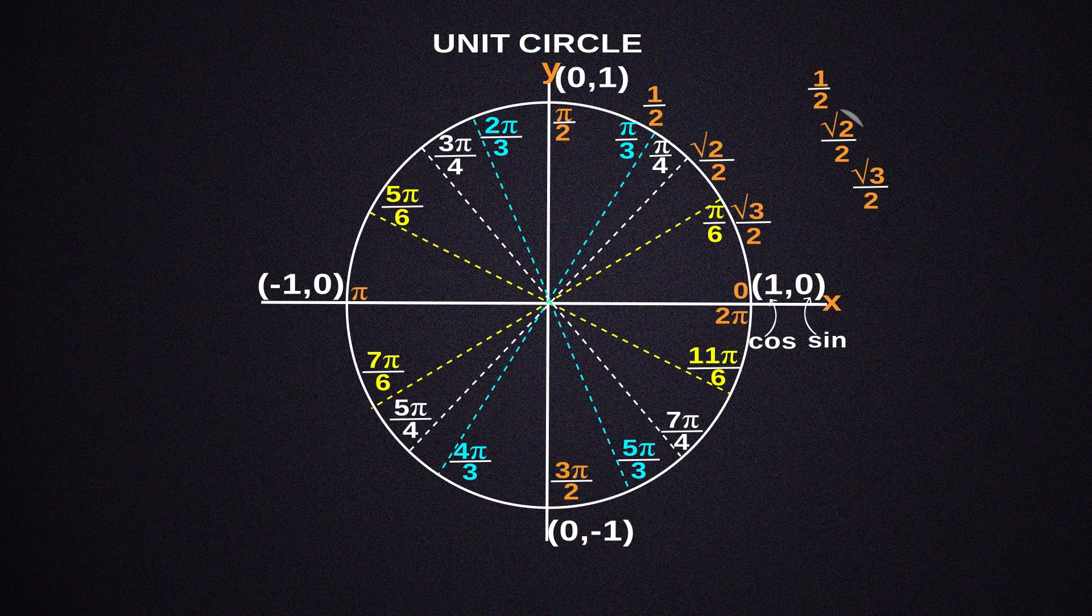Just keep in mind that the smallest number is 1/2. The middle size number is √2/2, sometimes known as root 2 over 2, and the highest number is √3/2. It's crucial to memorize these numbers because you'll be using them frequently.